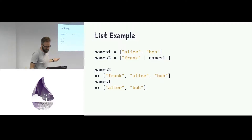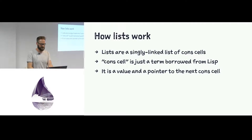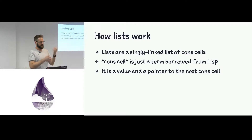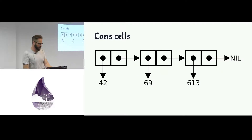Names two just essentially points back. How does that work in Elixir? I'll just say Elixir because saying Elixir/Erlang is annoying. Lists are a singly linked list of cons cells — a term borrowed from Lisp. Each cell contains a value and a reference to the next cell in the chain, and the first cell is the head of the list.